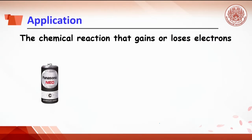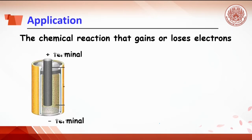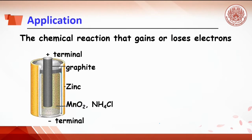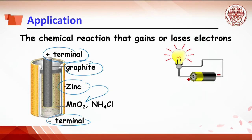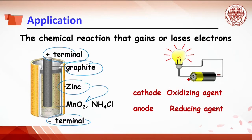A dry battery is an example of an electrochemical cell. In the battery, there are chemicals and electrodes. The plus terminal or cathode terminal is made from graphite, and the minus terminal is made from zinc. After connection, the reaction between zinc and manganese dioxide takes place causing electron flow. In this experiment, students should understand more about what is the cathode, anode, oxidizing agent, and reducing agent.